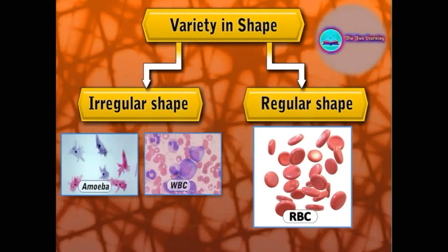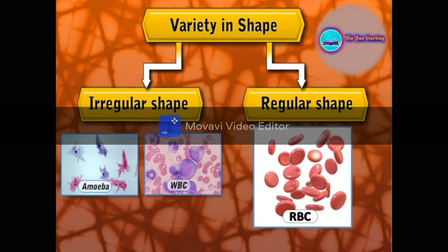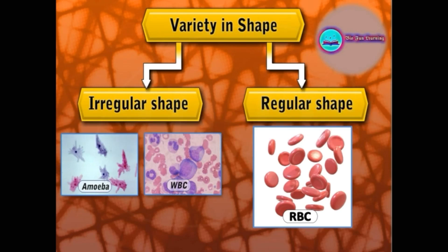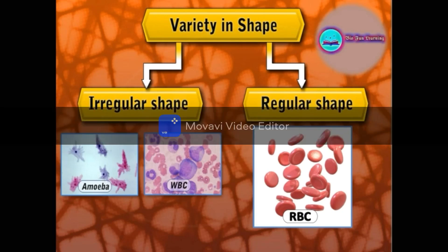Let's study cell shape. The shape of the cell depends upon the function it performs. The shape of the cell may change or remain the same. Cells take part in functions like excretion, circulation, respiration, etc. On that basis, cells are divided into two types: irregular cell shape and regular cell shape.